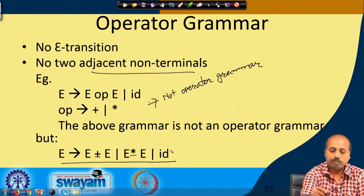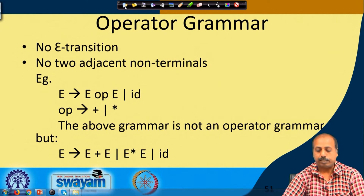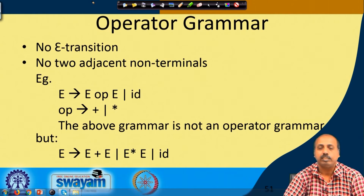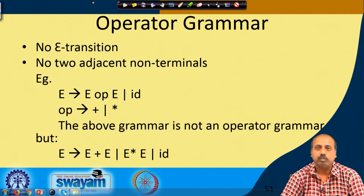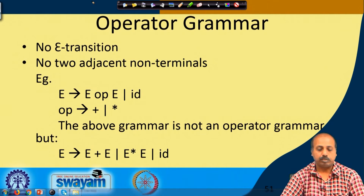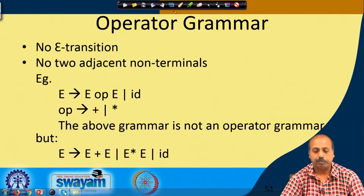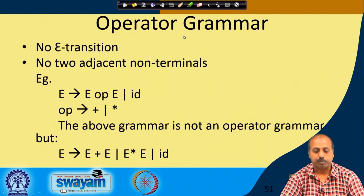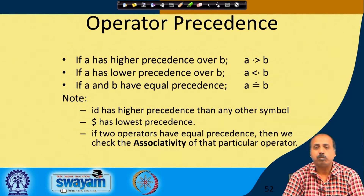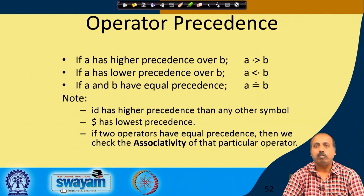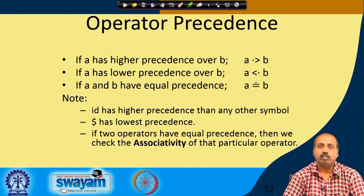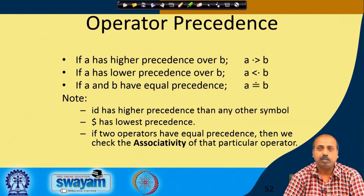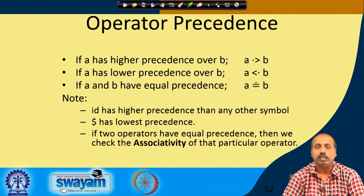We can use this grammar for operator precedence parsing. Given a grammar, we first check whether it is an operator grammar. If not, we check whether some simple modification can convert it into one. If we can do that, we can frame the operator precedence parsing table and follow operator precedence parsing. The precedence of operators means that whenever we have operators, some have higher precedence — for example, from mathematics, multiplication has higher precedence than addition.